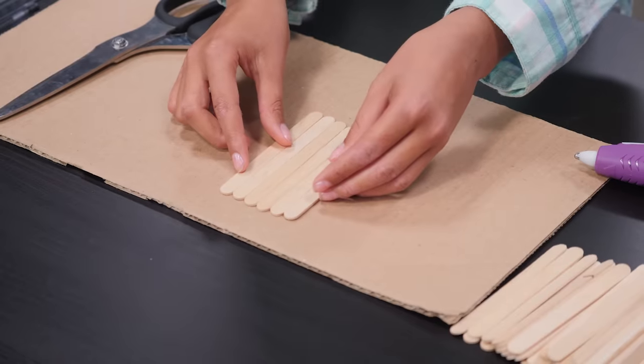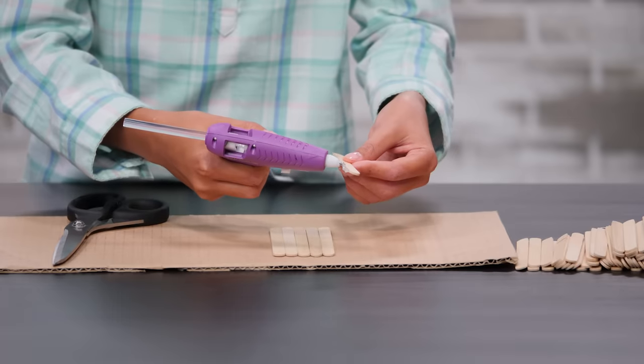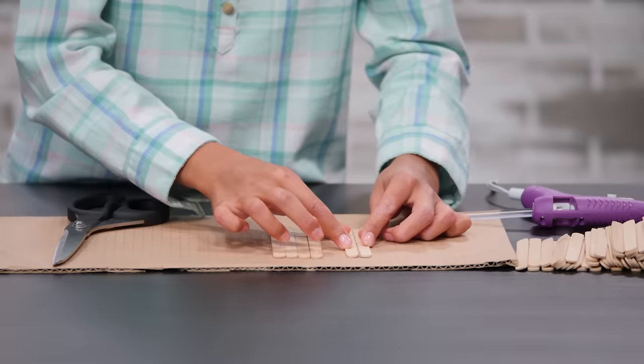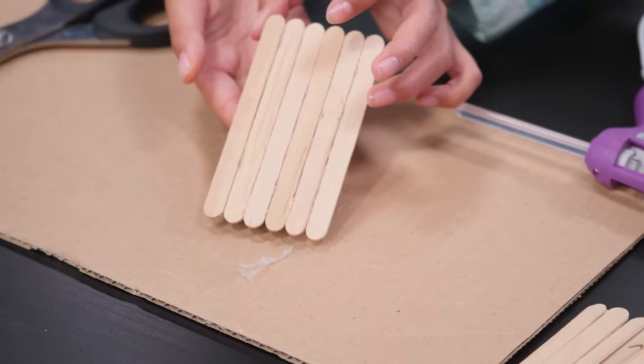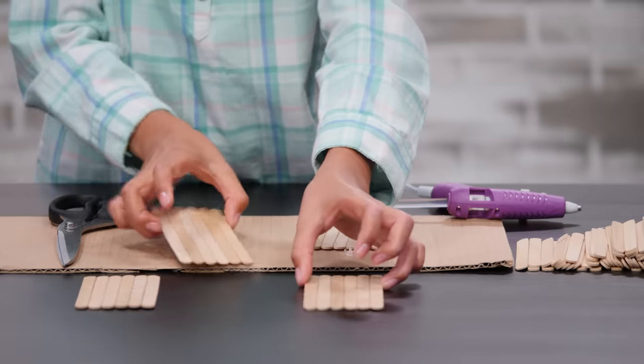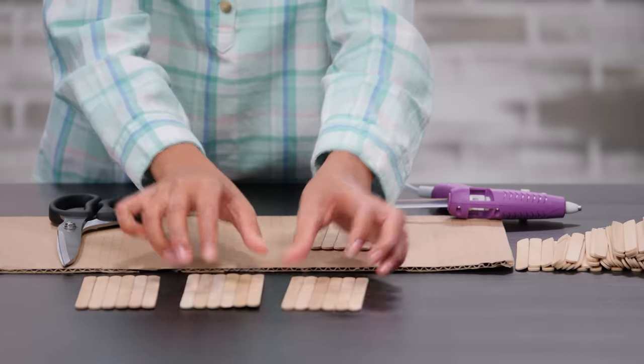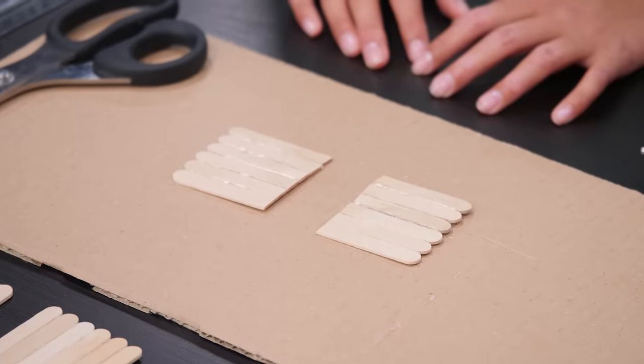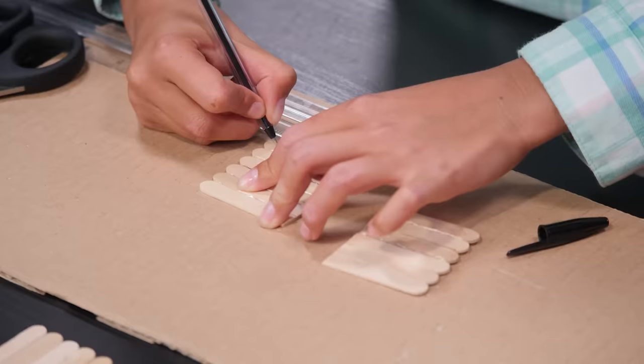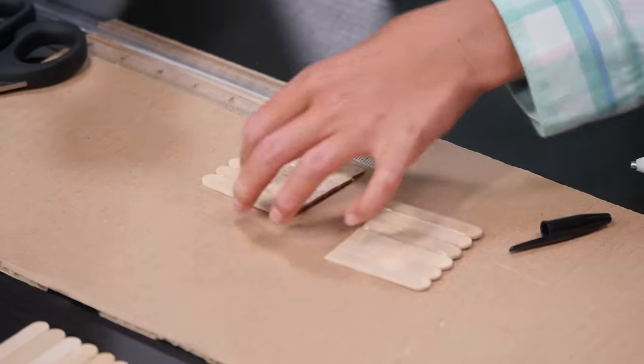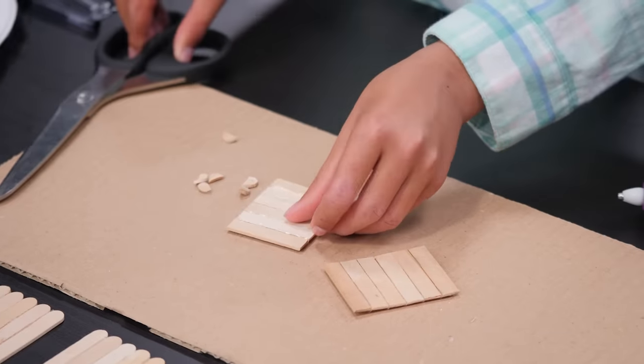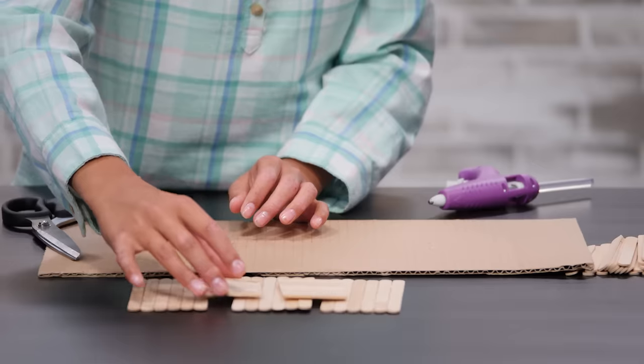Start by making the sides of your box. Glue six popsicle sticks side by side. You'll need to make four of these. Take one of your popsicle sticks sides and cut it in half. Using your ruler, measure two inches from the flat sides and cut. Cut off the rounded sides. Repeat this for your other half. You should now have two small rectangles.